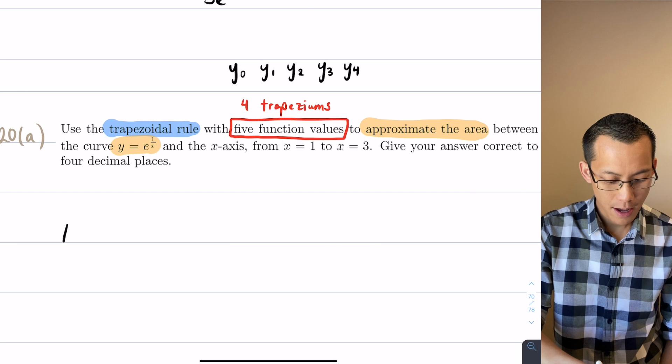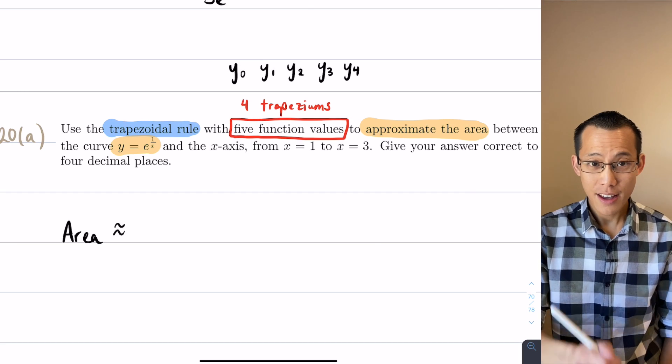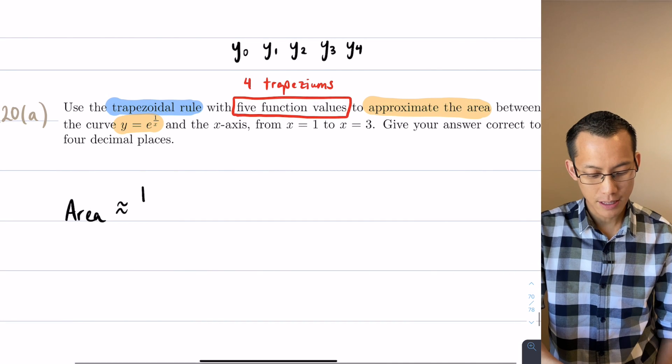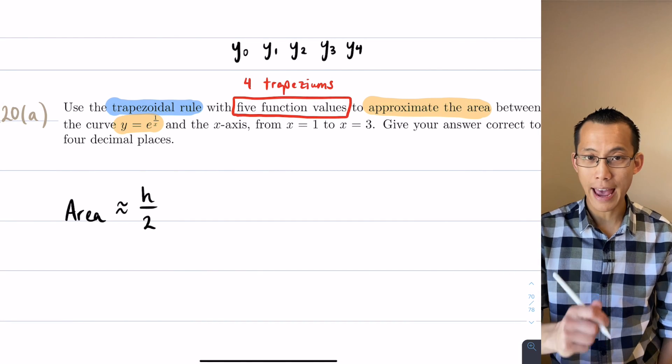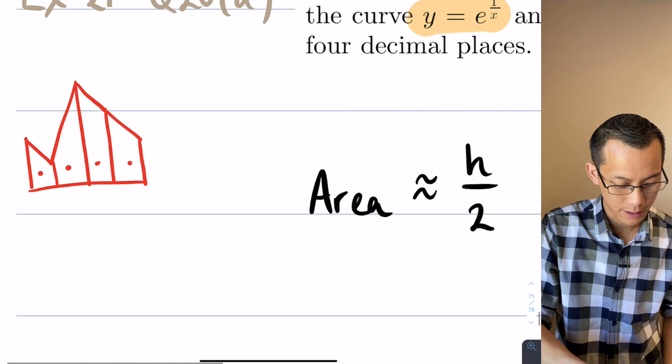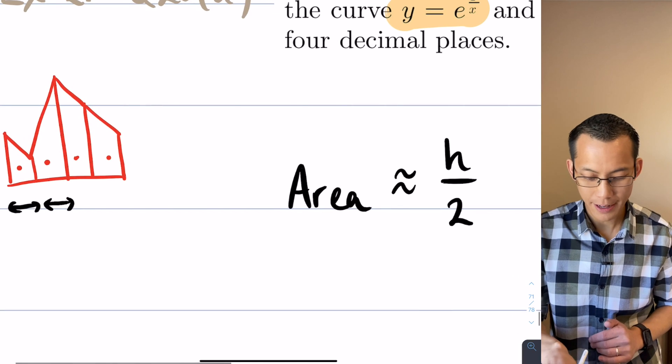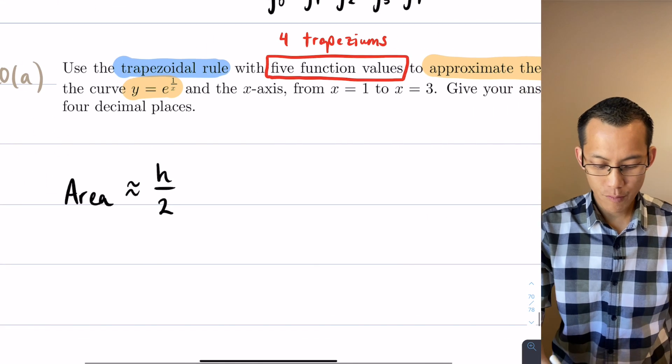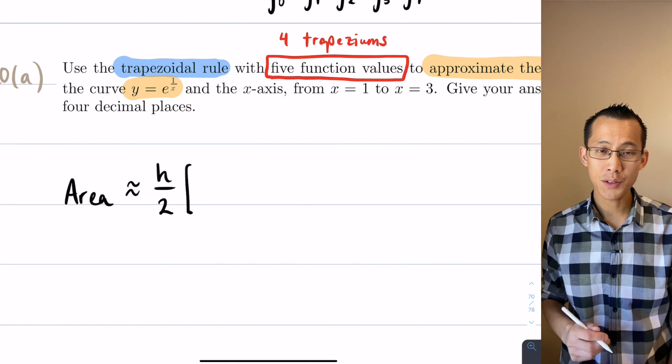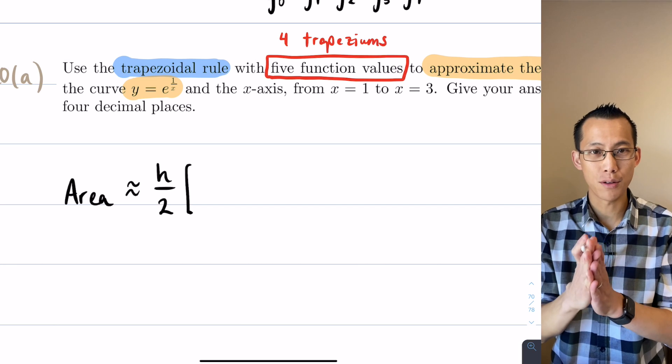So I can say the area is going to be equal to approximately h on two, where h is the height of each of the trapeziums. That distance there, they're all the same, that'll be our height h on two. And then what we multiply by is the first function value, the last function value, and then we double all the ones in the middle.